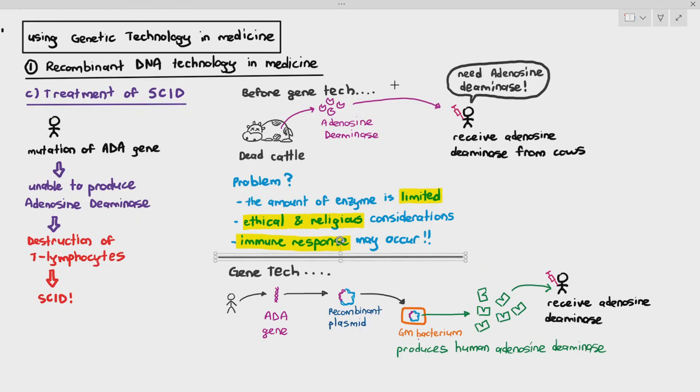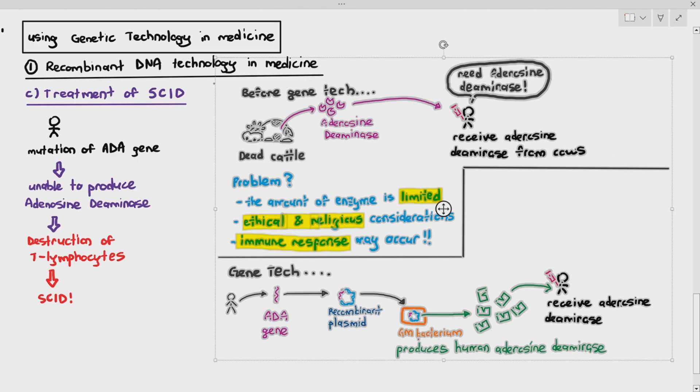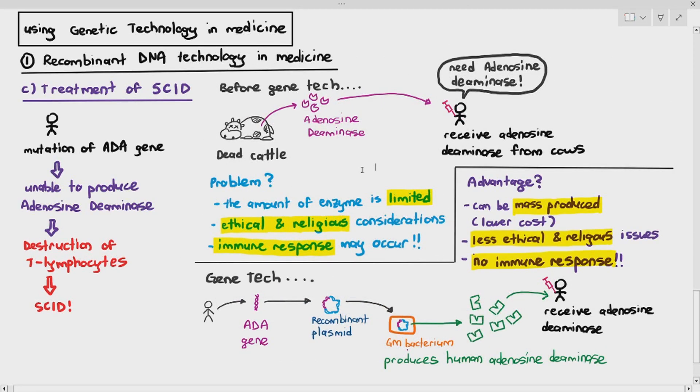So why is this a good thing? What are the advantages? Again, the same thing. It can be mass produced, it has a lower cost, there's less ethical and religious issues. And because the infant is receiving human adenosine deaminase, there won't be any immune response. So in this case, these are some of the ways we can use recombinant DNA technology in medicine to treat diabetes mellitus, hemophilia, and also SCID. These are the three diseases that you have to know when it comes to your paper 4 of Cambridge A Levels.